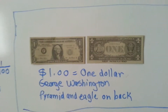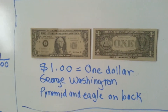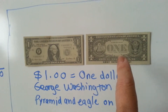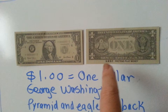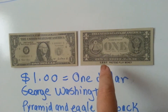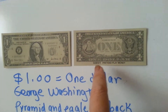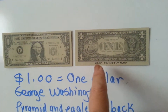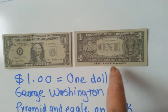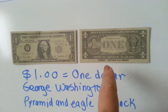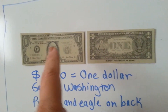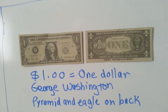Now let's see the paper money. This is the front, and this is the back. Now as you can see, I'm using play money, so the real money doesn't have the Asian print with pretend play money written on it. Other than that, it pretty much looks like this.